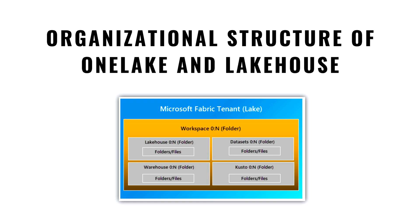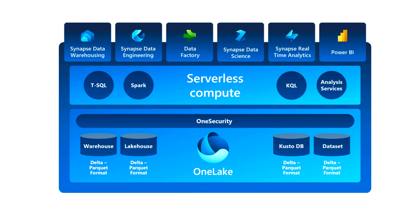The organizational structure of One Lake: the tenant maps to the root of One Lake and sits at the top of the hierarchy. You can create any number of workspaces within a tenant — similar to workspaces in Power BI where you store reports, dashboards, and data flows. You can also create multiple lakehouses within each workspace. A lakehouse is a collection of files, folders, and tables that represent a database over a data lake. In terms of service mapping: Synapse Data Warehousing uses T-SQL, Data Engineering uses Spark, Synapse Data Science can use KQL, and Power BI uses Analysis Services at the back end.